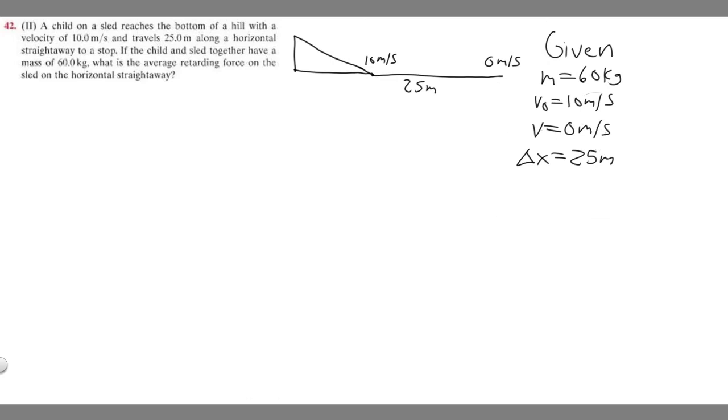So that's what we know. And so what are we trying to solve for? Keep in mind, they're asking the average force, essentially. And we know force equals mass times acceleration. We know the mass of the child on the sled, 60 kg. So in order to find the force, we have to find the acceleration. So what we're trying to do is solve for acceleration using these variables.